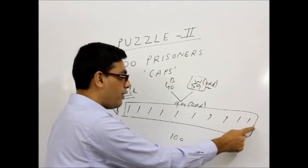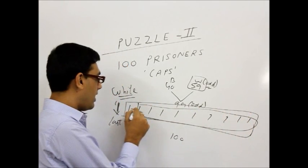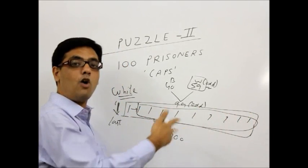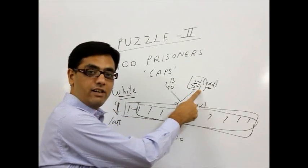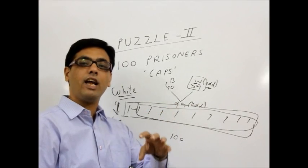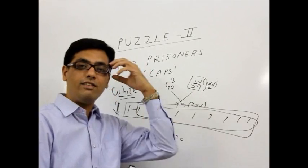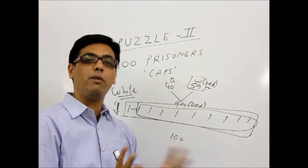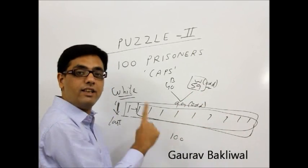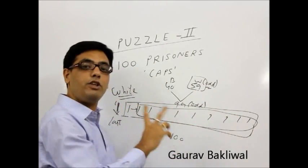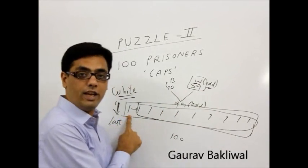The second guy will immediately count the whites in front of him from here to here. This guy will count how many whites he can see. If he is able to see 59 whites, he is sure that he has already seen odd number of white caps. And so he will say that his color is black. If he is able to see 58 white, that means even number of white, and then he will be sure that he is having a white cap so that the total including him should become odd.